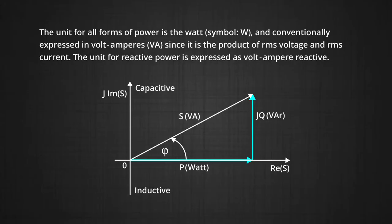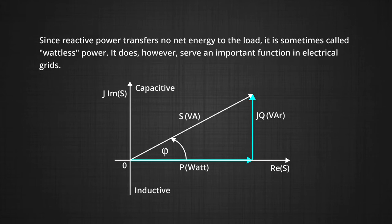Here we can say the unit for all forms of power is measured in watt which is symbolically written as W and conventionally it is expressed in volt amperes or VA. Since it is the product of RMS voltage and RMS current, the unit of the reactive power is expressed as volt ampere reactive. Since reactive power transfers no net energy to the load, it is sometimes called wattless power. It does however serve an important function in electrical grids or we can say in transmission centers where power is transferred from one station to another station.